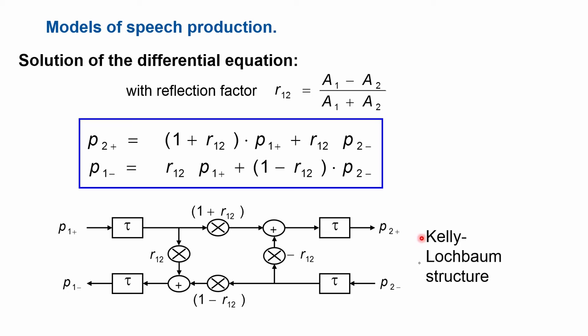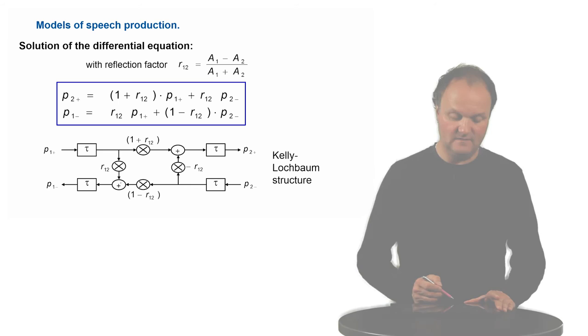This structure of the tube model is called the Kelly-Lochbaum structure, and it can of course be easily realized with these delay lines which represent the time the sound pressure wave needs to travel through a tube segment, and then this reflection configuration which represents what happens at the intersection of two tube elements.